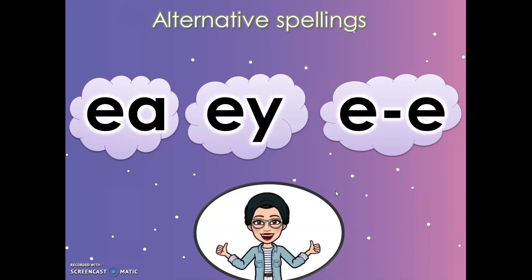So in today's video we're going to focus on the 'ee' family with its alternative spellings. It could be written as 'ea' and this usually comes in the middle of the word, or 'ey' which usually comes at the end of the word, or the split digraph 'e_e' with the magic e. All three of them make the same sound: 'ee'. Can you have a go?